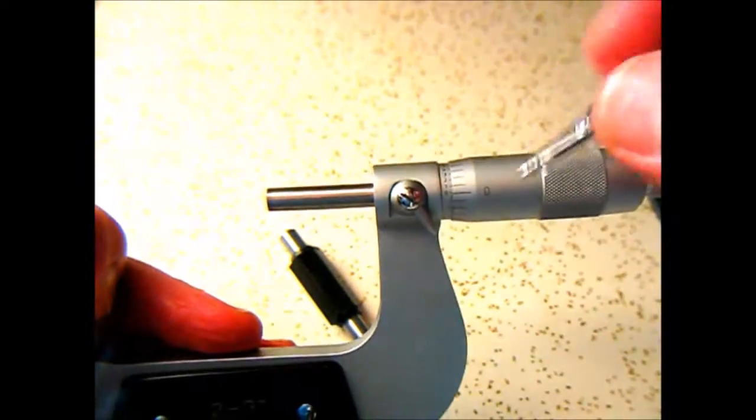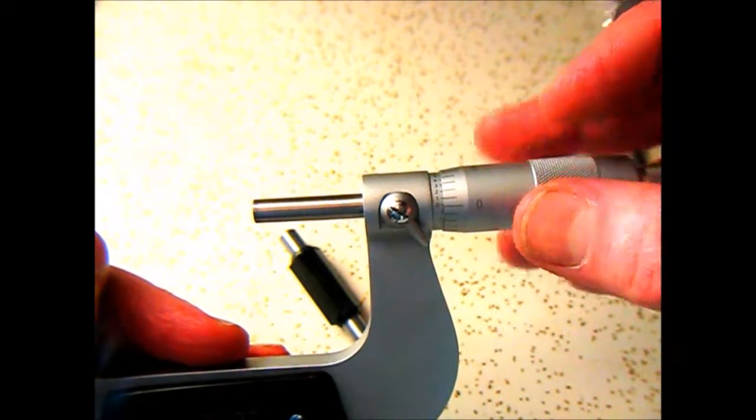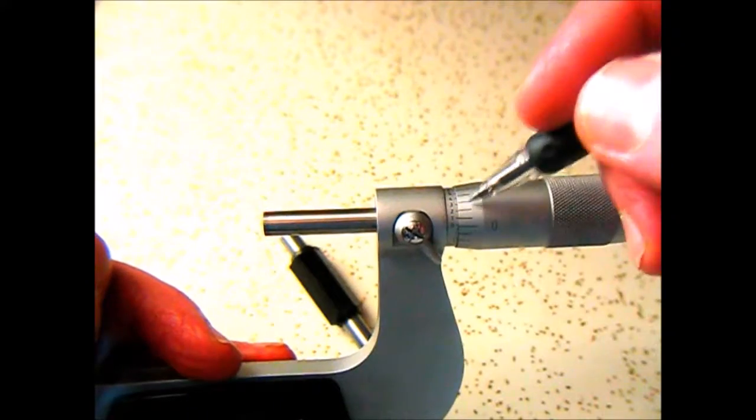Now to get two ten-thousandths, you have to line up the line with the two, right there. To get to three, you have to line up the line with the three, right there.